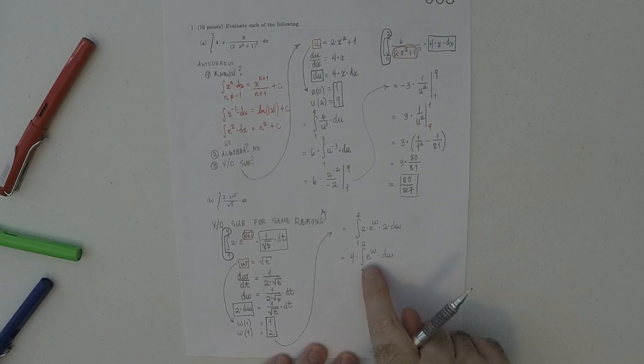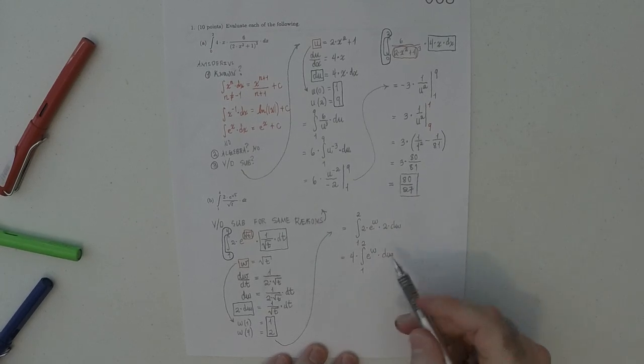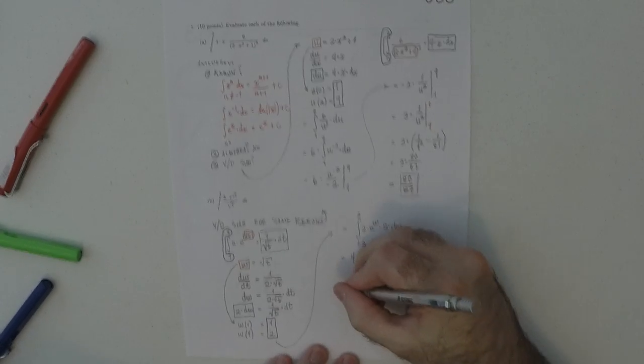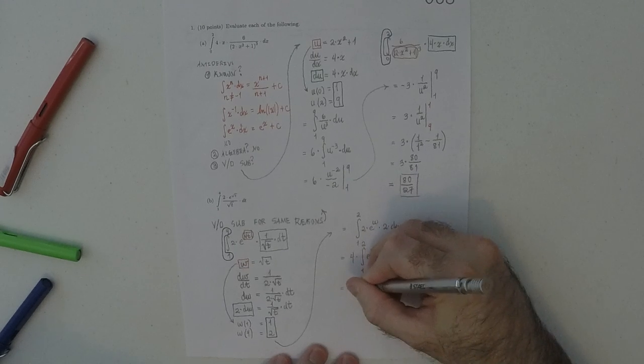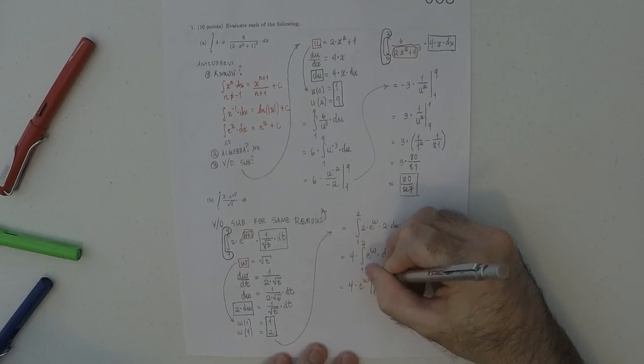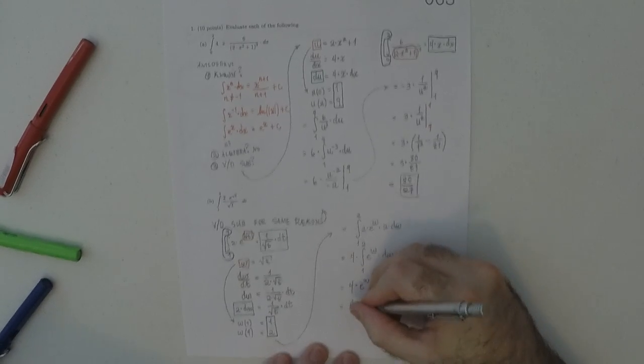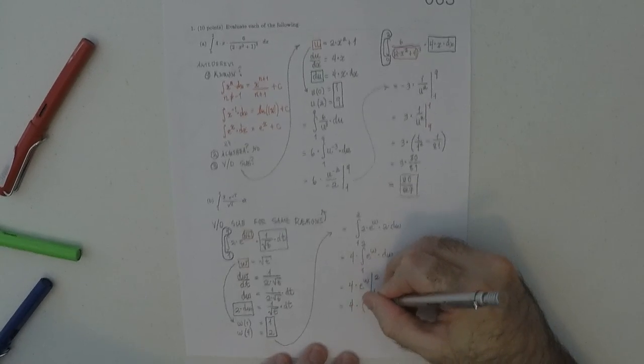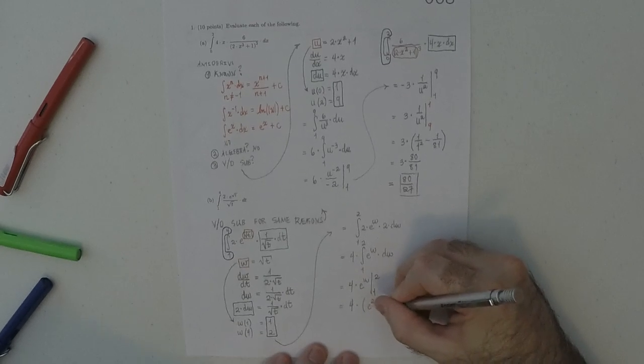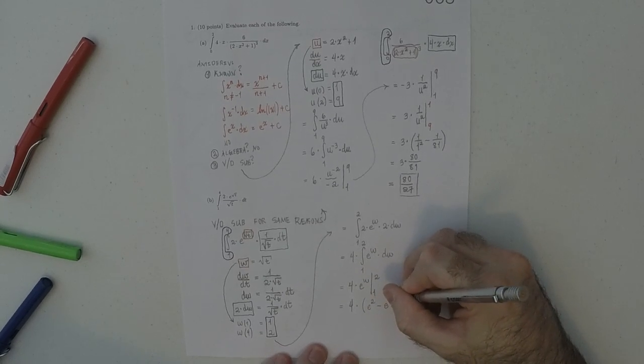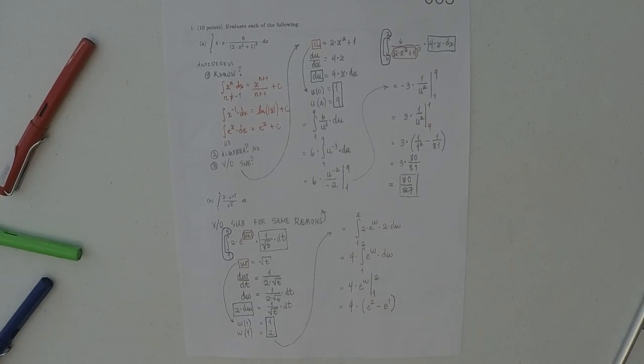So that's, you know, to use the fundamental theorem of calculus, we know that antiderivative. So, this would be 4 exponential of w evaluated from 1 to 2. So, that'd be 4, exponential of 2 minus exponential of 1. And that's the answer.